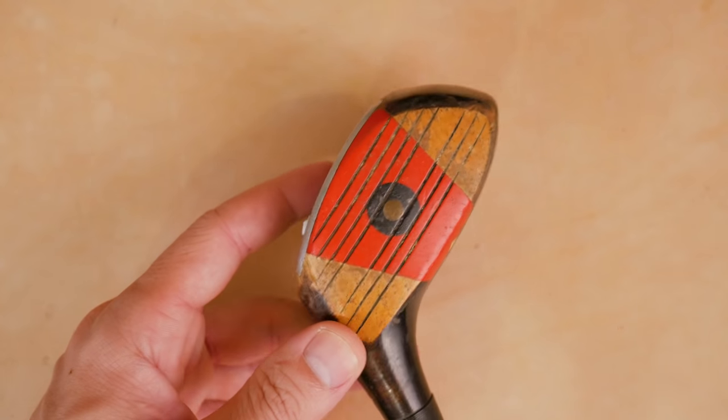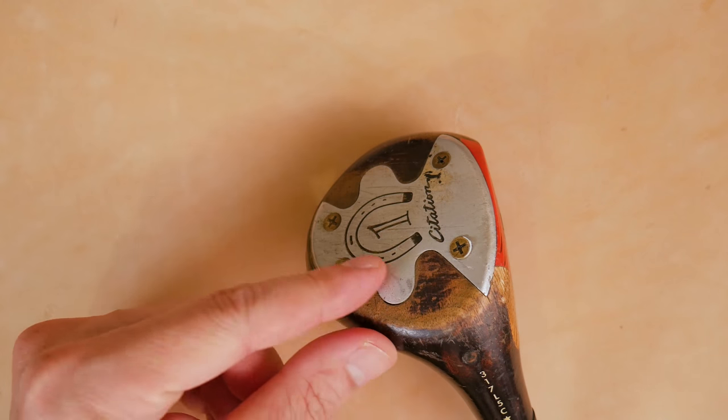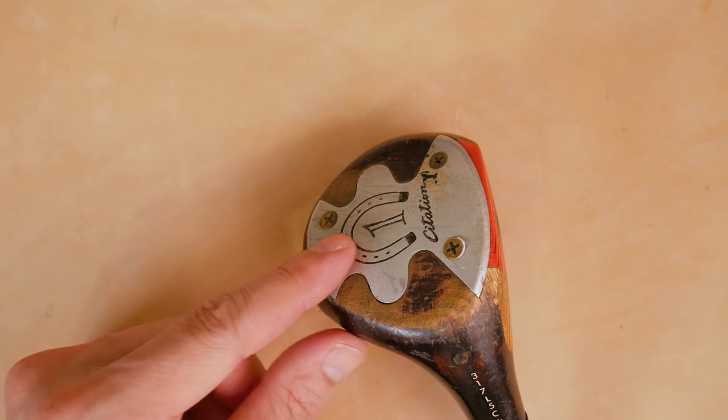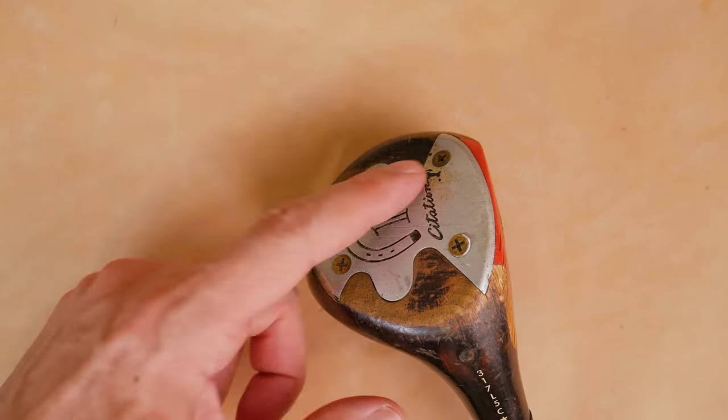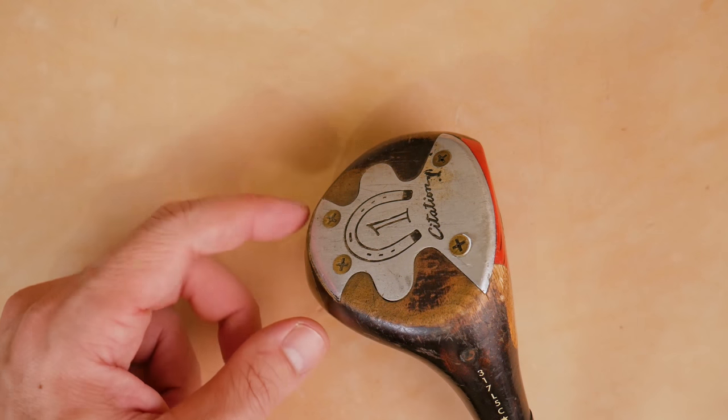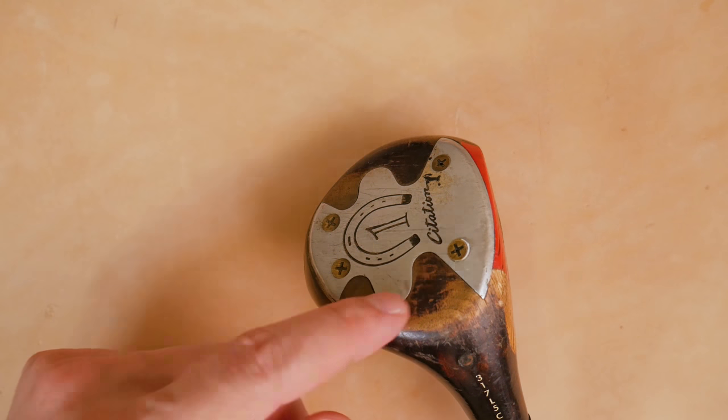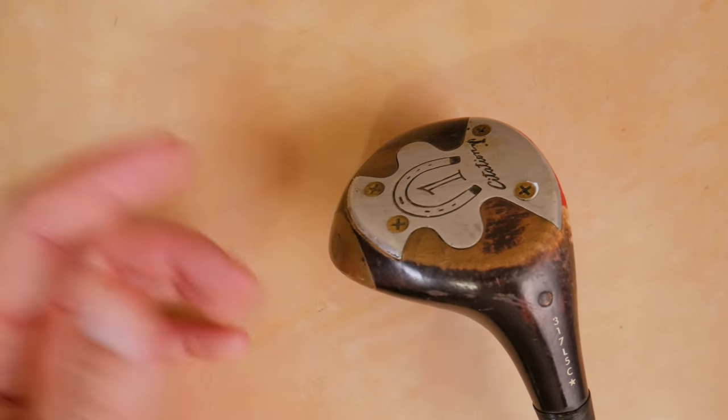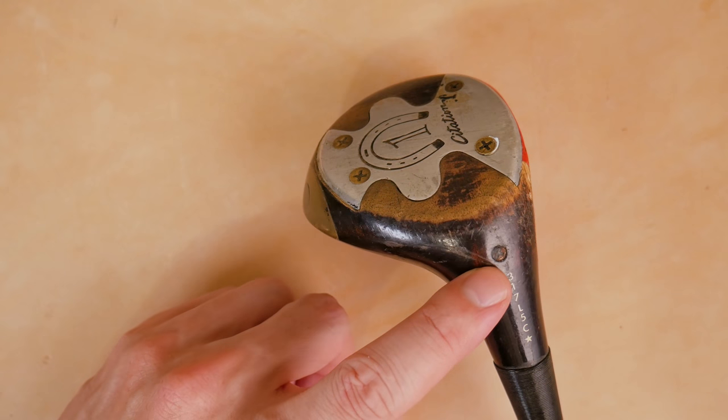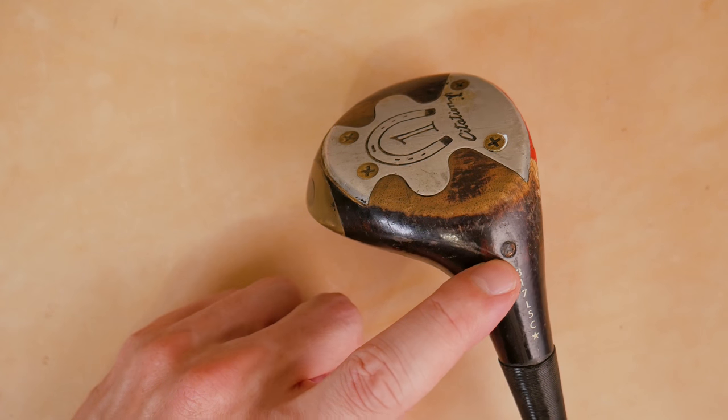Solid persimmon. The Citation soleplate, Citation 1, the horseshoe four screw blob, ghost shaped insert right here. You can see the little arms right here, the two eyes on the ghost. Just pretty stock standard, bog standard Citation from the 70s.